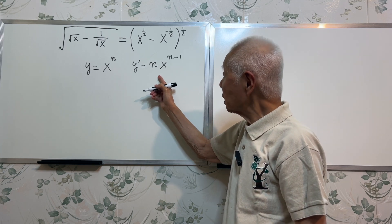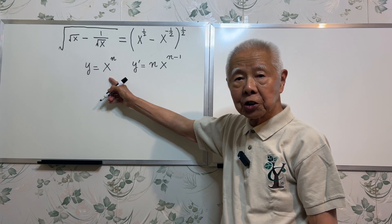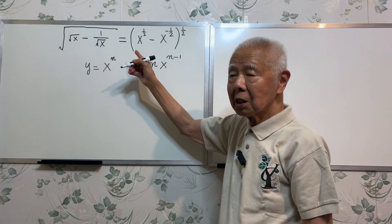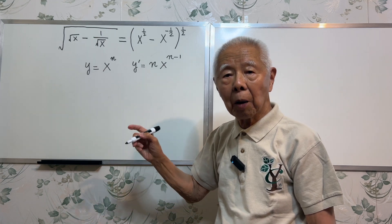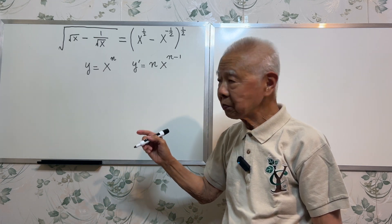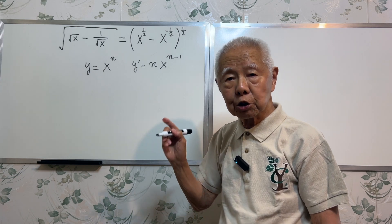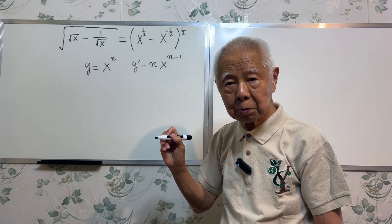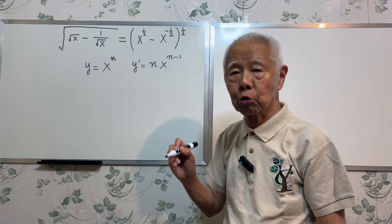However, I do not have a single x in the bracket. I have a more complicated function of x. Therefore, what we need to use is called a chain rule. It's power rule plus chain rule.